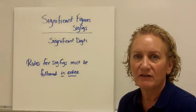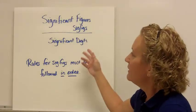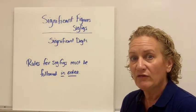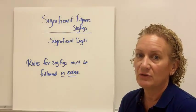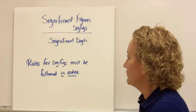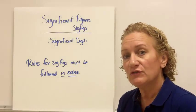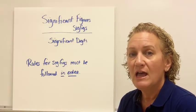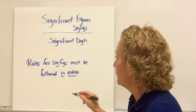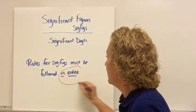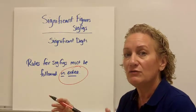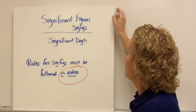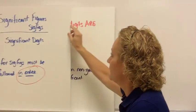Hi, today we're going to talk about significant figures. Significant figures are sometimes referred to as significant digits, but what I refer to a lot as just sig figs, and so do a lot of other teachers. I have some rules for significant figures for figuring out which numbers are significant and which aren't. The most important thing is that the rules have to be followed in order — rule 1 first, then rule 2, then rule 3, etc. Let's get to the rules.